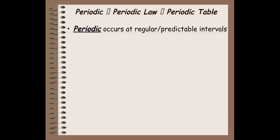What we need to talk about is this word 'periodic.' Periodic means that there's something that occurs at regular or predictable intervals — something that repeats over and over again. For example, the swinging back and forth of a pendulum is considered periodic. So, we're going to look at what is periodic in the periodic table.